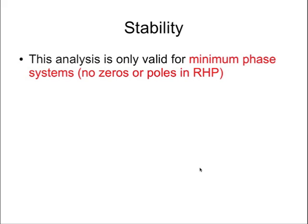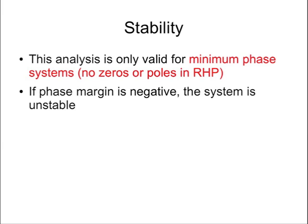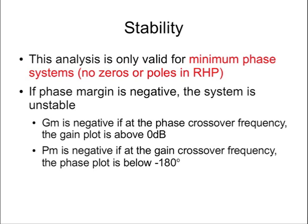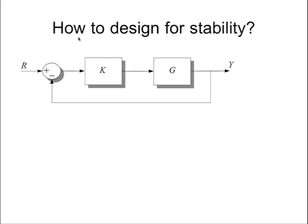This stability analysis is only valid for minimum phase systems, meaning there are no zeros or poles in the right half plane. If the phase margin is negative, the system is unstable. The gain margin is negative if at the phase crossover frequency the gain plot is above zero decibels. The phase margin is negative if at the gain crossover frequency the phase plot is below minus 180 degrees.